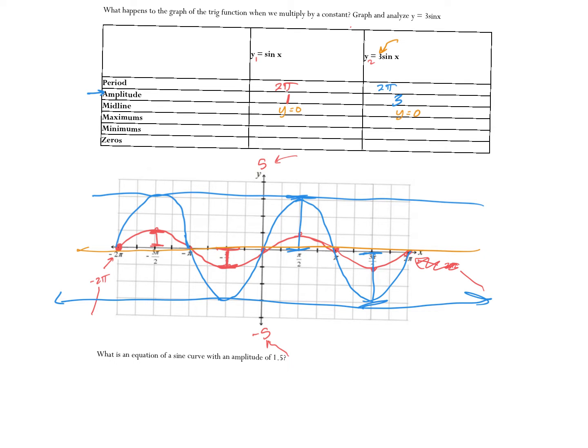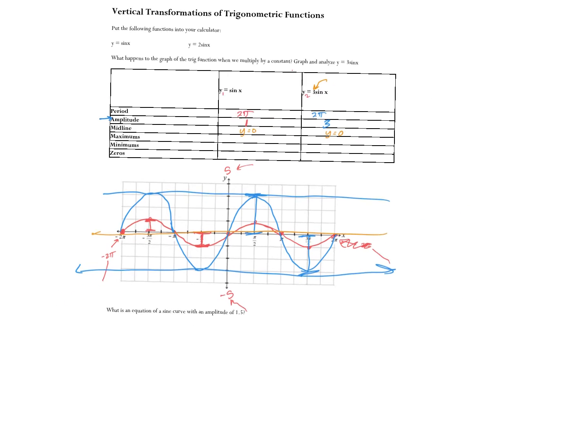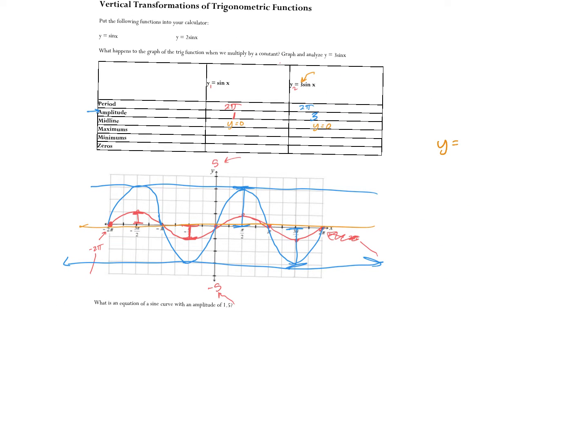So, what did this three in front of the sine x do? We got to be really careful. It technically stretched it up, okay? It made that amplitude different. So, whether it's sine or cosine, it doesn't matter. When you have y equals some number in front of your sine function, that number, the number in front, is always your amplitude.